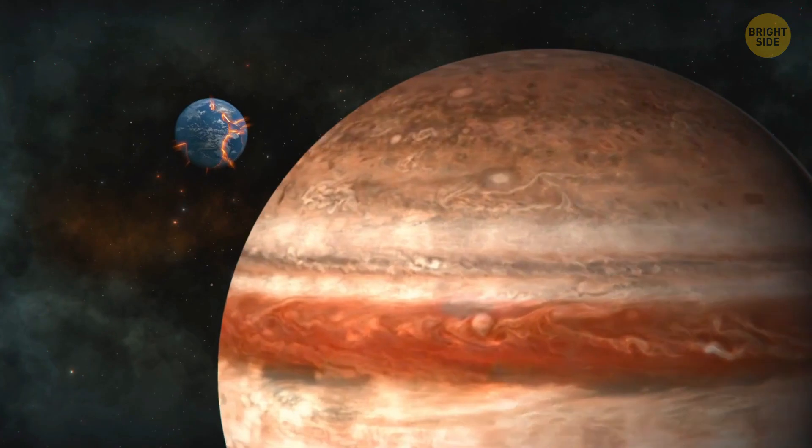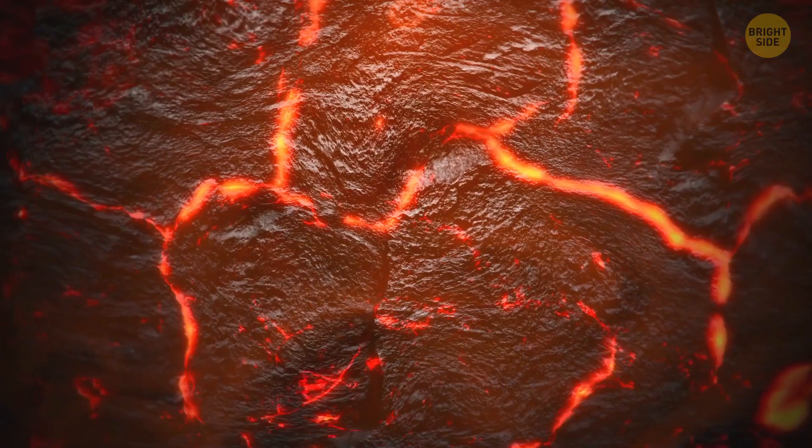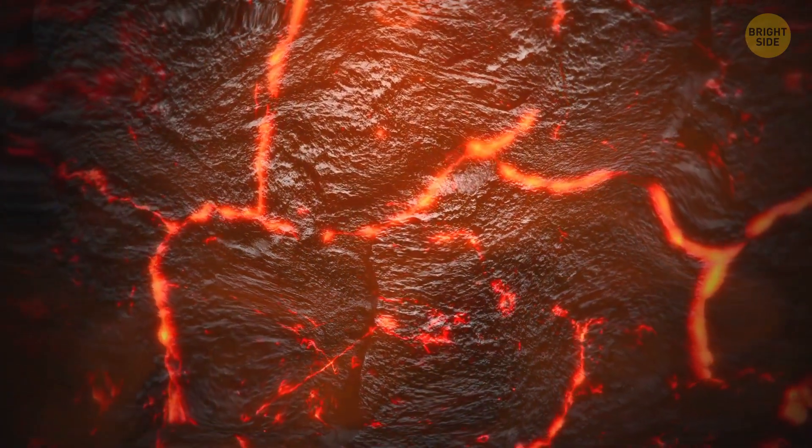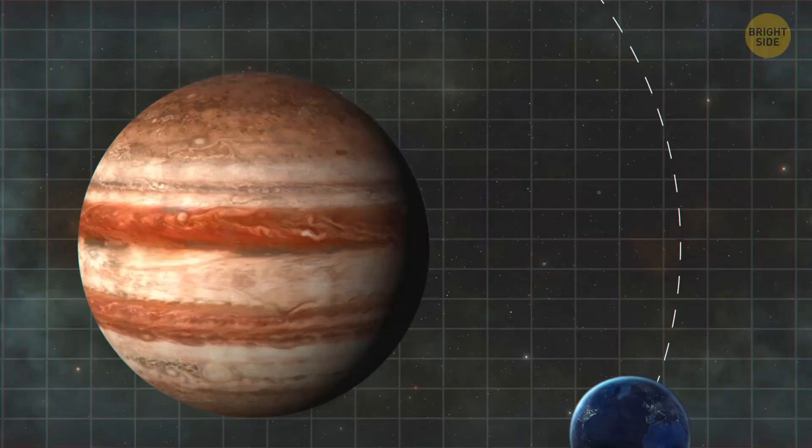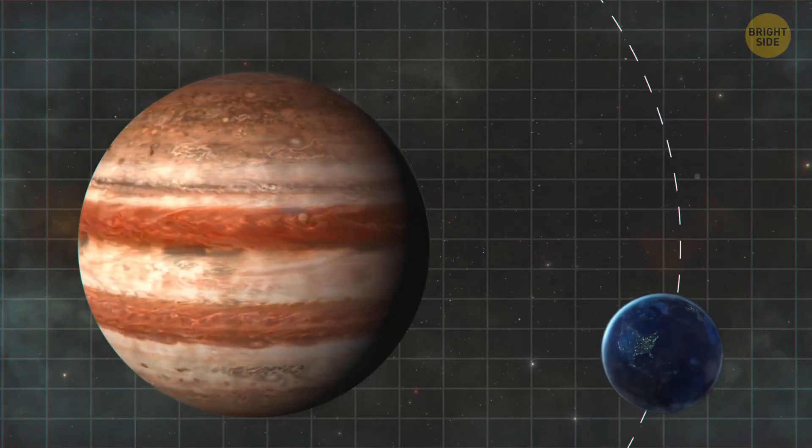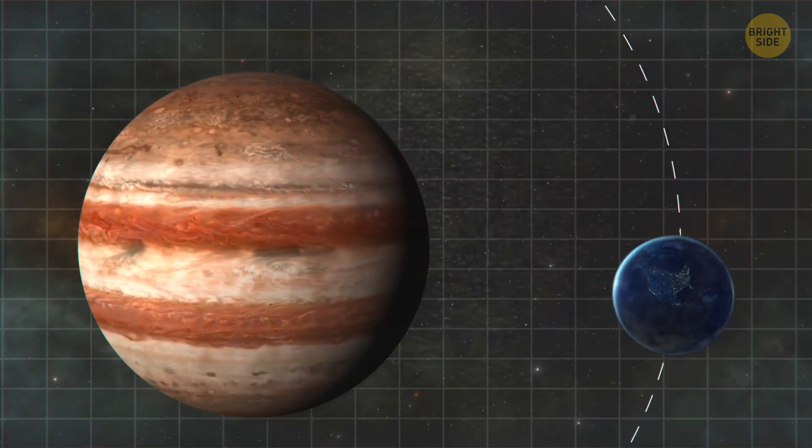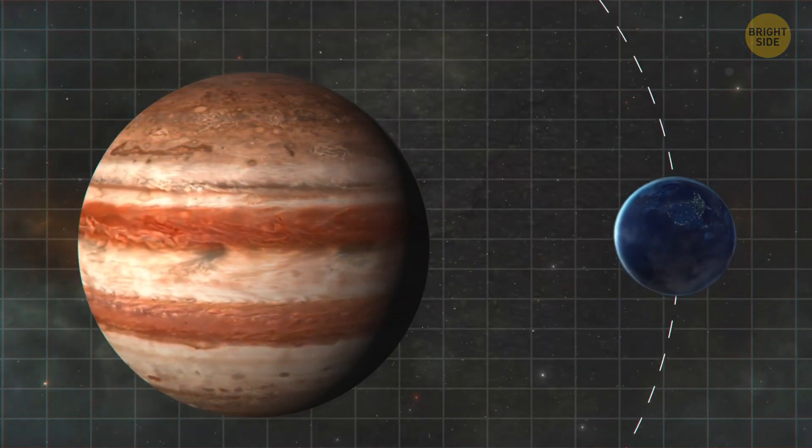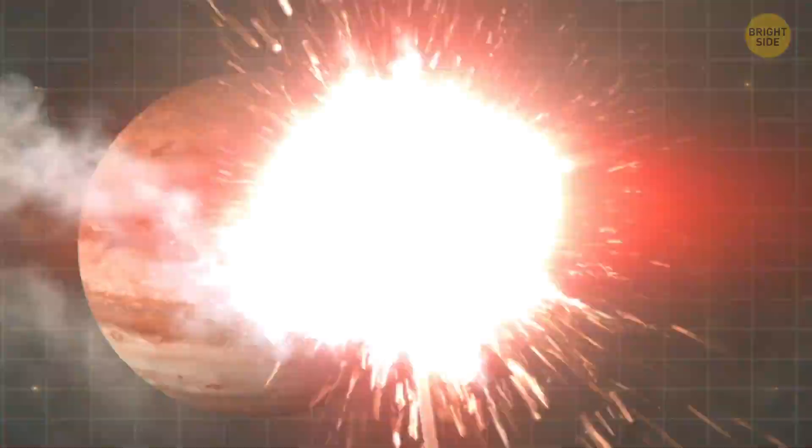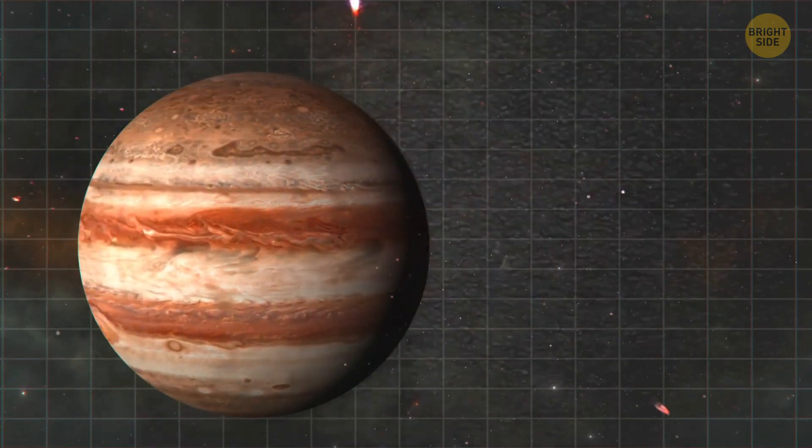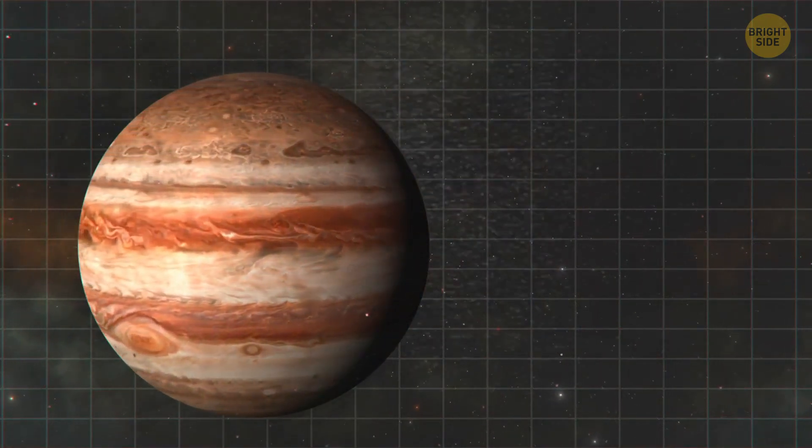It'd be stretched and compressed with such force that its surface would bulge back and forth by more than 300 feet. Unfortunately, Earth's speed is only 10% of the speed needed for us to stay in Jupiter's orbit. That's why our sluggish planet would crash into the gas giant in less than a day. Well, that sounds unpleasant, so let's not do that.